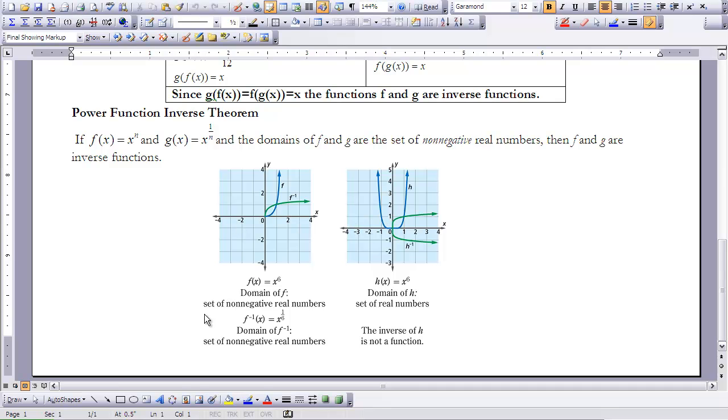So the basic differences that we have with these two graphs is in the first one, we restricted the domain to the set of non-negative real numbers. When we restrict the domain, then the function and its inverse are both functions.